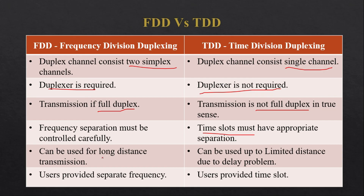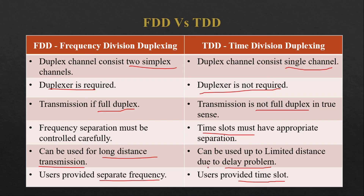FDD can be used for long-distance transmission because the uplink and downlink operate at different frequencies, so propagation delay does not cause interference. In TDD, however, long distances can add delay to the signal, which may create interference between time slots. In FDD, each user gets a separate frequency, while in TDD, each user gets a separate time slot.